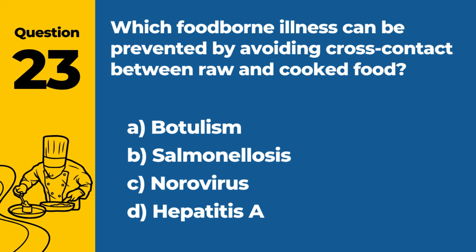Question 23: Which foodborne illness can be prevented by avoiding cross-contact between raw and cooked food? A. Botulism. B. Salmonellosis. C. Norovirus. D. Hepatitis A. Answer: B. Salmonellosis. Salmonellosis, caused by salmonella bacteria, can be prevented by avoiding cross-contact between raw and cooked food, as it is commonly associated with raw meat and poultry.